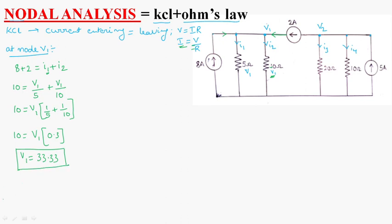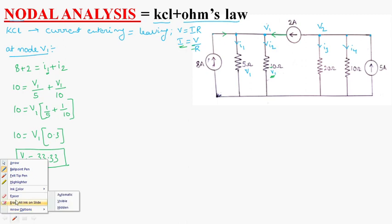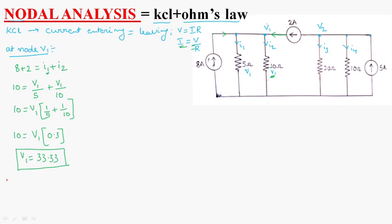And now, let us apply the nodal analysis at node V2. At node V2, what is happening? 5 amperes of current is entering and remaining all the currents are leaving. What are the leaving currents? 2 amperes, I3 and I4.